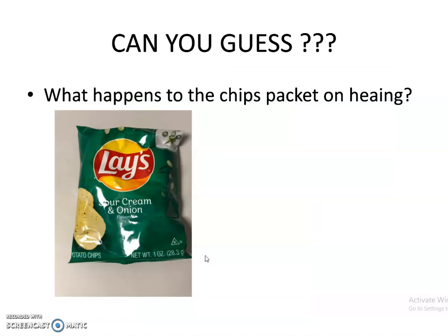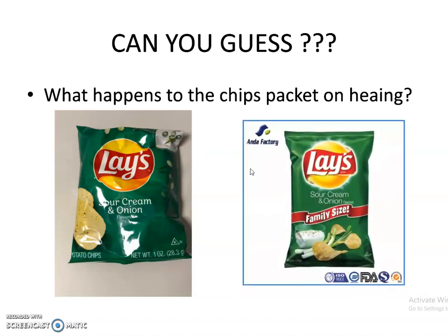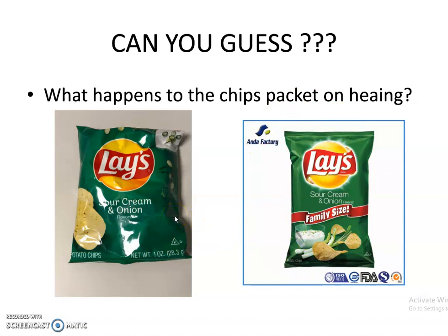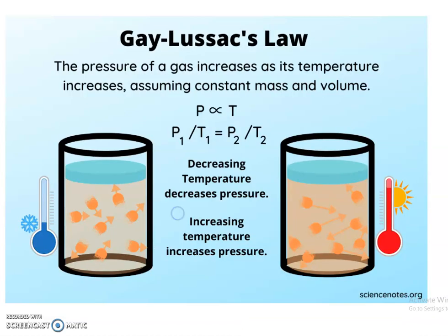Can you guess what happens if you take a chips packet from the shop and keep it over boiling milk covered with a plate? Yes — the chips packet would bulge, because the air inside the packet expands on heating. Charles Law says that at constant pressure, when temperature is increased, volume increases. This is how Charles Law operates in our day-to-day life.